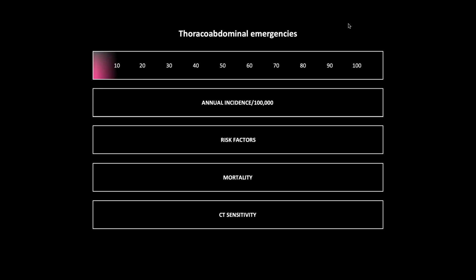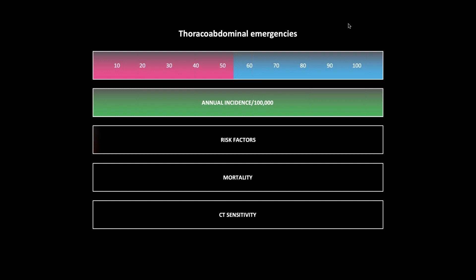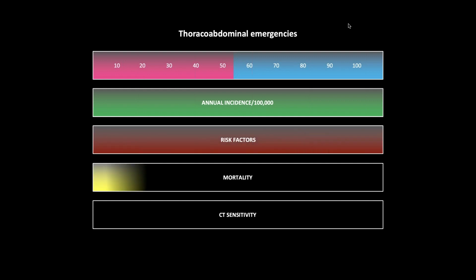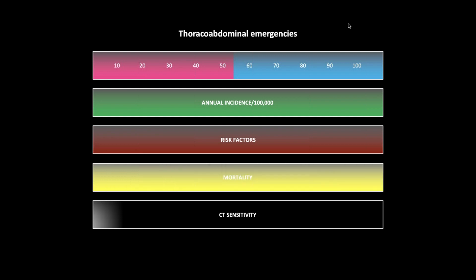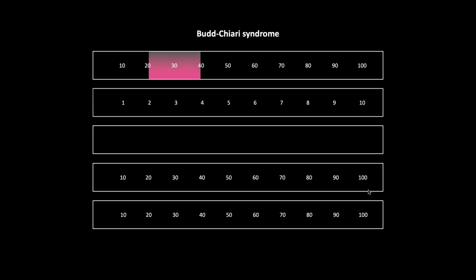You'll see the typical age range and gender distribution — pink for female, blue for male, white for equal in both genders. We will also show the annual incidence per hundred thousand in green, risk factors in red, the percentage mortality for that entity, and lastly the CT sensitivity. All of these stats were taken from the NCBI, the National Center for Biometric Information.